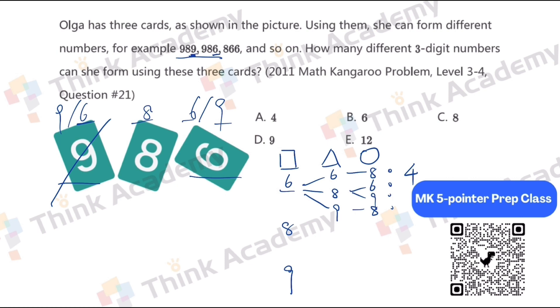If the square is 8, then the triangle can be 6 or 9. And if the triangle is 6, then the 1's place can be 6 or 9. The same, which is 1, 2, 3, 4, also 4.